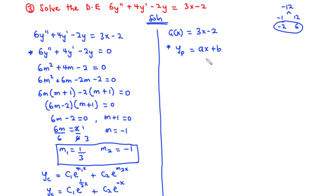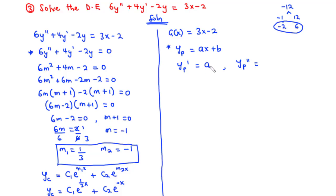If yp = ax + b, then differentiating with respect to x: yp' = a (since b is constant, its derivative is 0). Differentiating again, yp'' = 0, since a is also a constant.